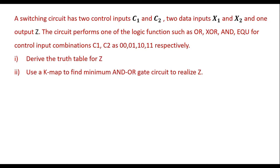In this video, let me realize the Boolean expression and logic circuit for the given logic. The logic is: a switching circuit has two control inputs C1 and C2, two data inputs X1 and X2, and one output Z. The circuit performs one of the logic functions OR, XOR, AND, and XNOR for control input combinations C1C2 = 00, 01, 10, 11 respectively. Derive the truth table for Z and use K-map to find the minimum AND-OR gate circuit to realize Z.